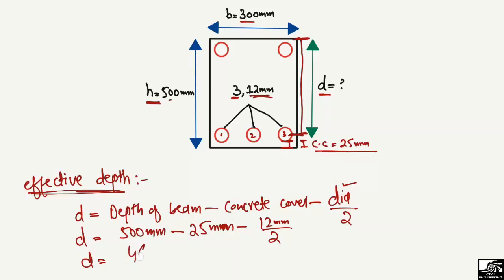We get 469 millimeters. So our effective depth of the beam for this scenario is 469 millimeters with a concrete cover of 25 millimeters. It depends on two things: the concrete cover, the diameter of the bar, and of course the total depth of the beam, which is the main factor.